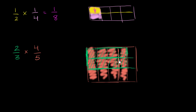But what fraction of the whole does that represent? How many total equal sections do we now have? We have fifteen equal sections, and that makes sense — we started with five equal sections but then divided each of those into three equal sections, so now we have five times three total equal sections.